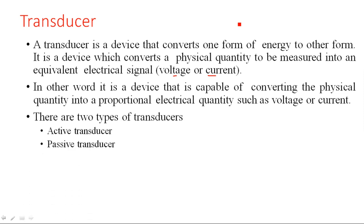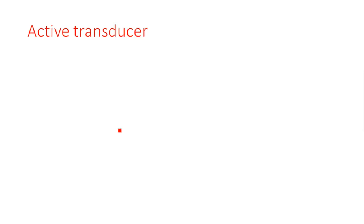There are two types of transducers: active transducers and passive transducers. What do you mean by active transducers, and what type of transducers can you call passive transducers? Before going into those definitions, let's look at some examples of transducers from daily life.